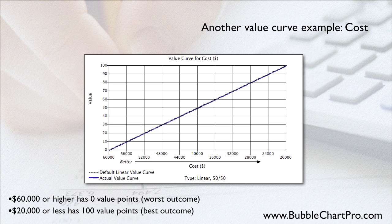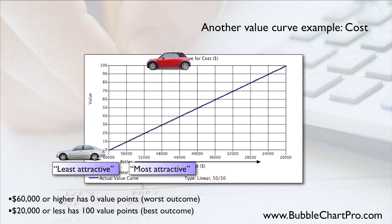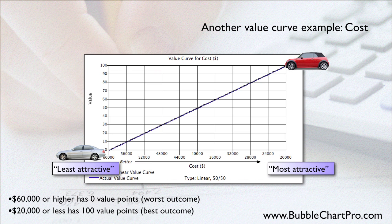Here is another example. This one is for the attribute called cost. In this case, cars priced at $60,000 or more earn no value points for cost, and cars priced at $20,000 or less earn 100 value points for cost. Of course, there are cars that cost more than $60,000, and there are cars that cost less than $20,000. But this chart reflects this buyer's preference that cars costing more than $60,000 and cars costing less than $20,000 will not be considered. Spending $20,000 would be this buyer's best outcome, and spending $60,000 would be this buyer's worst outcome. Most cars this buyer would consider would cost between $20,000 and $60,000, and would have value scores between 0 and 100.